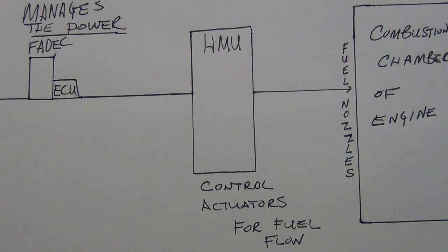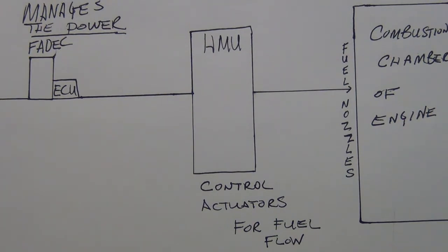FADEC controls power management by sending signals to the HMU. The HMU breaks things down and measures the fuel to get to the fuel nozzles. I refer to the key parameters as TPQ — temperature, pressure, and quantity. That's the HMU's operation: calibrating, measuring, and calculating fuel pressures. It also meters fuel flow — density has a lot to do with flow rate of a fluid, and it's important that fuel goes to the nozzles at a certain rate to have the desired thrust at any given point, regardless of aircraft attitude.